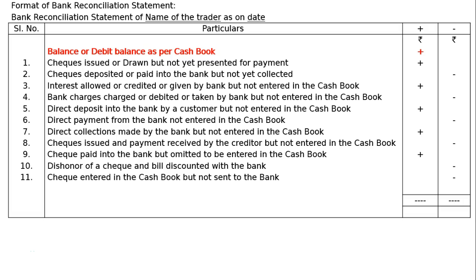We have to total the plus items and write the amount down; the same amount will be written in the minus column. All minus amounts will be deducted to find the difference — the balancing figure — that is, the balance or credit balance as per the passbook. If you are starting with the overdraft as per the cash book, the opening overdraft balance will be recorded in the minus column.